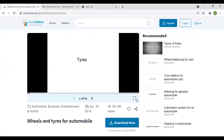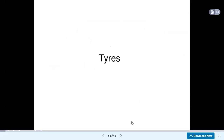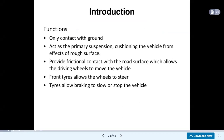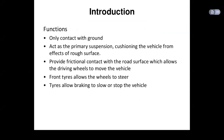Now we will see the lecture related to tyres. Looking at the introduction, the function is only contact with ground — tyres are in contact with the ground. It acts as the primary suspension, cushioning the vehicle from the effects of rough surfaces. Rubber material is used in this tyre so that it acts as a suspension, also called primary suspension. The cushioning effect is provided by the tyre to the complete vehicle. If the road surface becomes rough, the tyre takes those bumps and absorbs the vibrations.